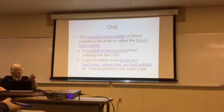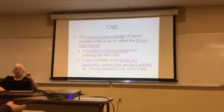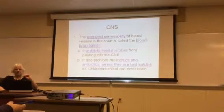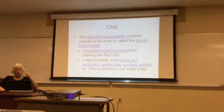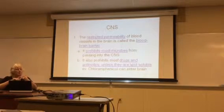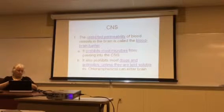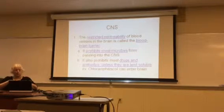For the brain, there is a restricted permeability called the blood-brain barrier, and it prohibits most microbes from passing into the central nervous system. It also prohibits most drugs from going in if we need to get drugs in there, unless they are lipid-soluble. An example of one antibiotic or chemotherapy that can go through into the brain is chloramphenicol.